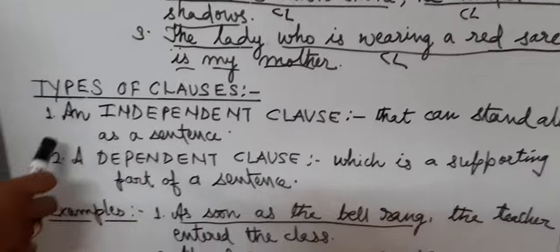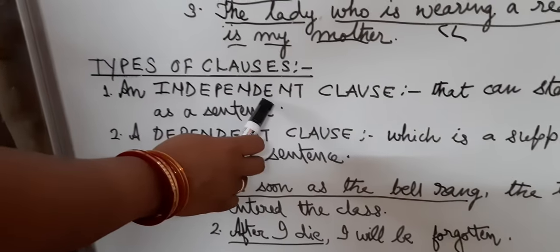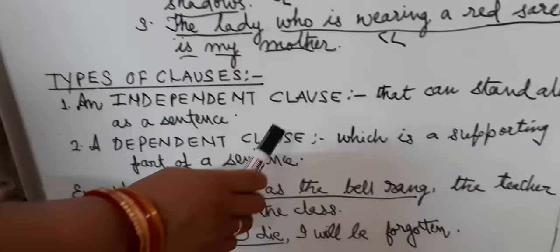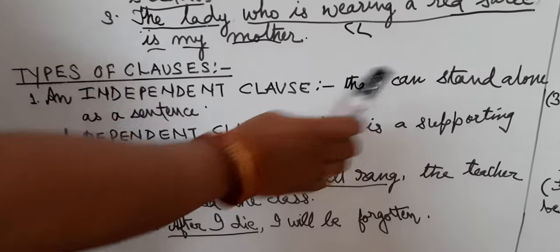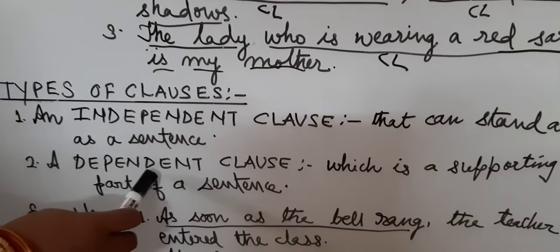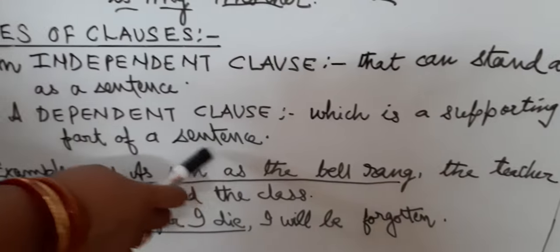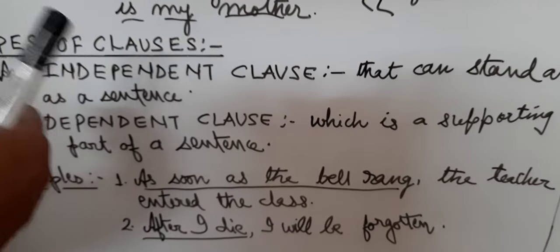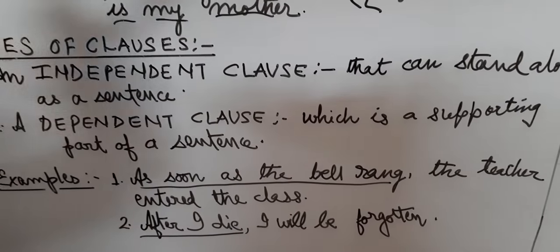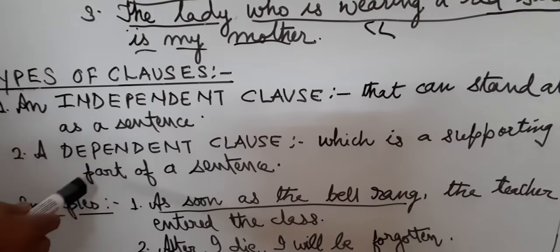Next, types of clauses. An independent clause is one that can stand alone as a sentence — jo akele meaning de sakta hai, which gives complete meaning. A dependent clause is one which is a supporting part of a sentence — jo sentence ko support karta hai, which gives extra meaning to the sentence but cannot act as a sentence on its own. Wo akela independent arth nahi de sakta.